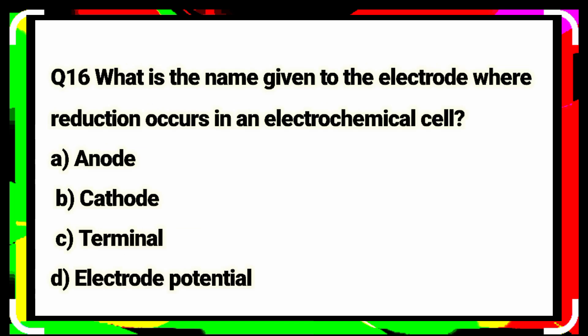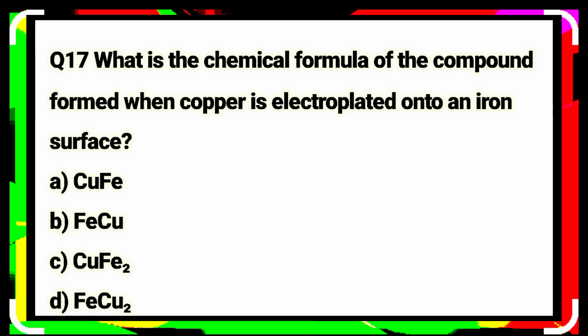Question number sixteen: what is the name given to the electrode where reduction occurs in an electrochemical cell? Anode. Option A is the correct answer. Question number seventeen: what is the chemical formula of the compound formed when copper is electroplated onto an iron surface? Option D is the correct answer.